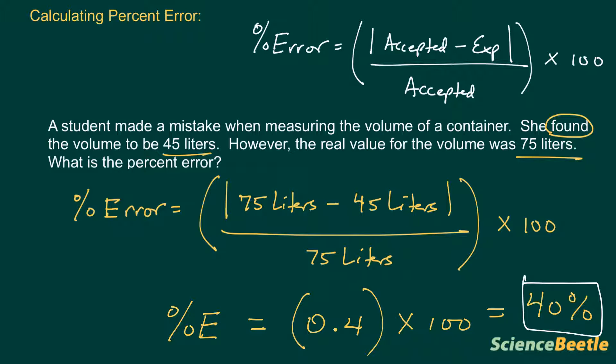Notice that we wrote 40. What we need to make sure that we write here is, because we do have two significant figures in each of the two numbers provided for us, 45 has two significant figures, 75 has two significant figures, so the only thing that's missing here from our final answer is a decimal at the end of the zero. So the answer is 40 point percent.